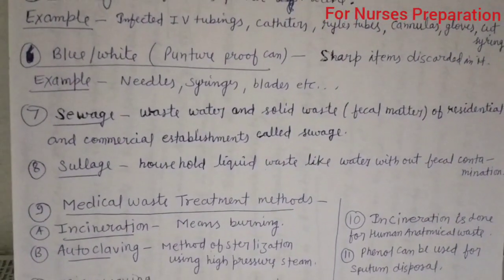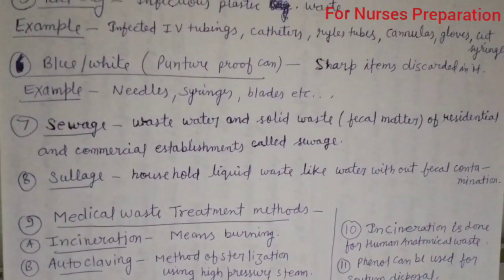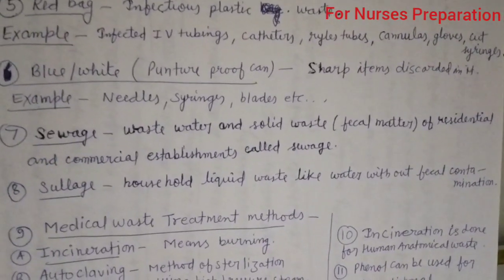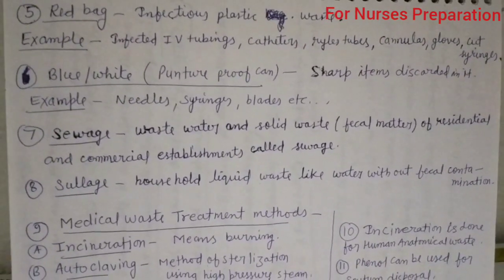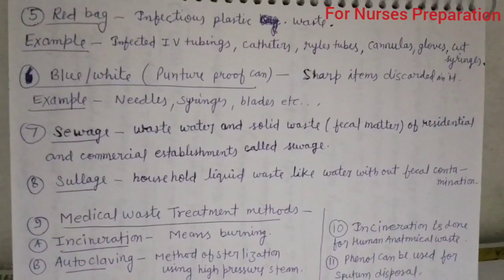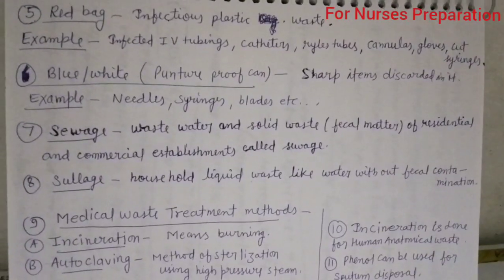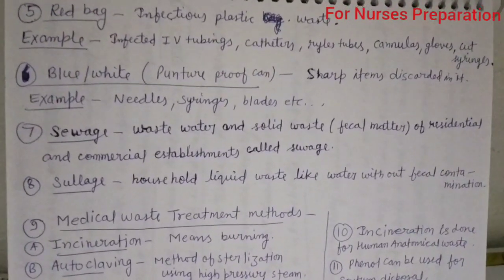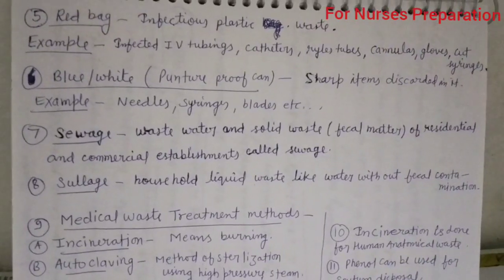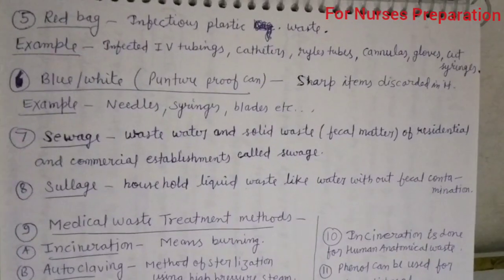Point number eight: what is sullage? Household liquid waste like water but without fecal contamination is known as sullage. Always remember: water waste or semi-solid waste without fecal matter is known as sullage, while wastewater with fecal matter or fecal waste is known as sewage.